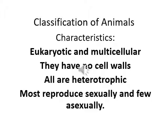Animal cells have more than one cell. They don't have cell walls — cell walls are basically present in plants. They are heterotrophic in nature, as they rely on autotrophs for food. Animals reproduce sexually, and a few reproduce asexually as well. These are the characteristics of an animal.